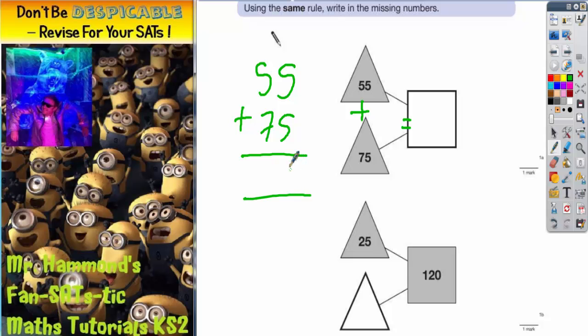5 and 5 is 10, put your 0 in, carry your 1. 5 plus 7 is 12, plus that one we've carried is 13. Put your 3 in, now we could carry the 1, but considering there's no extra column to add anyway, we might as well just put that 1 straight in. So the answer is 130.